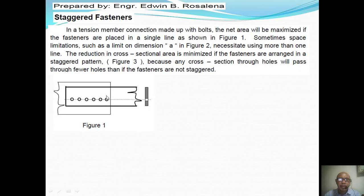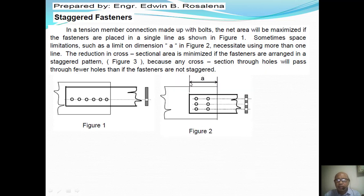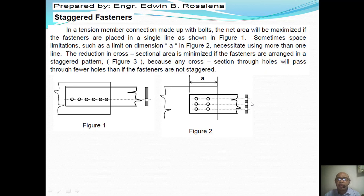By using a single line, we maximize the area because in computing the net area we only deduct one hole. But sometimes the dimension 'a' is limited, so we are forced to use many lines as in figure two. With many lines, the net area is reduced because we have more hole areas to deduct from the cross-section — in this case, three holes.